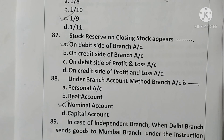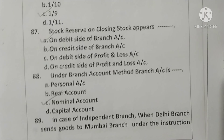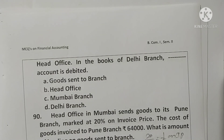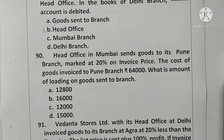Question 89: In the case of an independent branch, when the Delhi branch sent goods to the Mumbai branch under the instruction of the head office, in the books of the Delhi branch, the head office account is debited. Option B is correct.